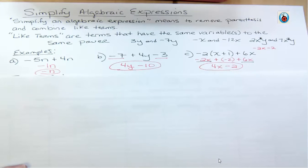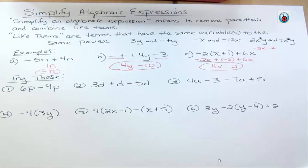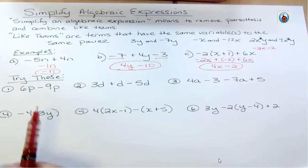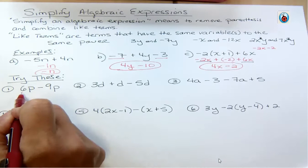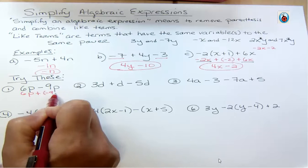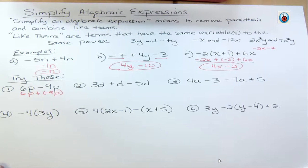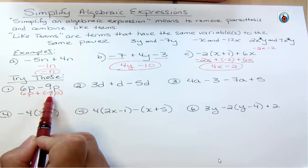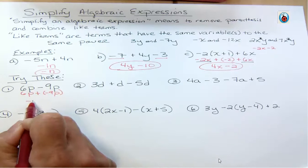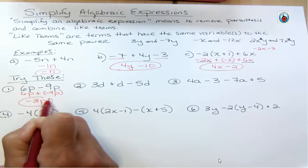Now there are six practice problems I'd like you to try — please pause the video and try them yourself so you can see where you're having trouble. For number one, think of this as plus a negative 9P. I have six positives and nine negatives — more negatives by three — so the answer is −3P. These are like terms because they both have P to the first power.